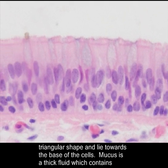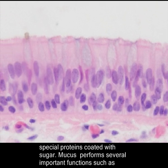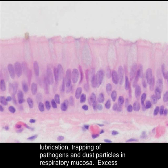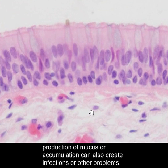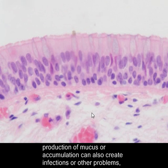Mucus is a thick fluid which contains special proteins coated with sugar. Mucus performs several important functions, such as lubrication, trapping of pathogens, and trapping dust particles in the respiratory mucosa. Excess production or accumulation of mucus can also create infections or other problems.